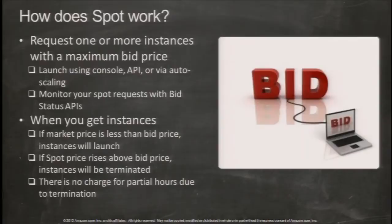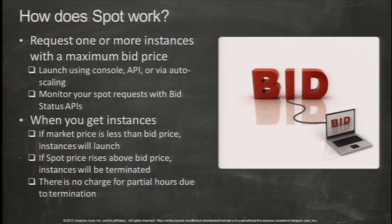The way that Spot works is that you start by submitting a bid. This bid price is basically the maximum you're willing to pay for your Spot instances. Then there's a spot price, which is set by Amazon and is based on supply and demand. Any time the spot price is lower than your bid price, you'll receive your instance. You can run however many instances you want. When the spot price goes above your bid price, you're interrupted.